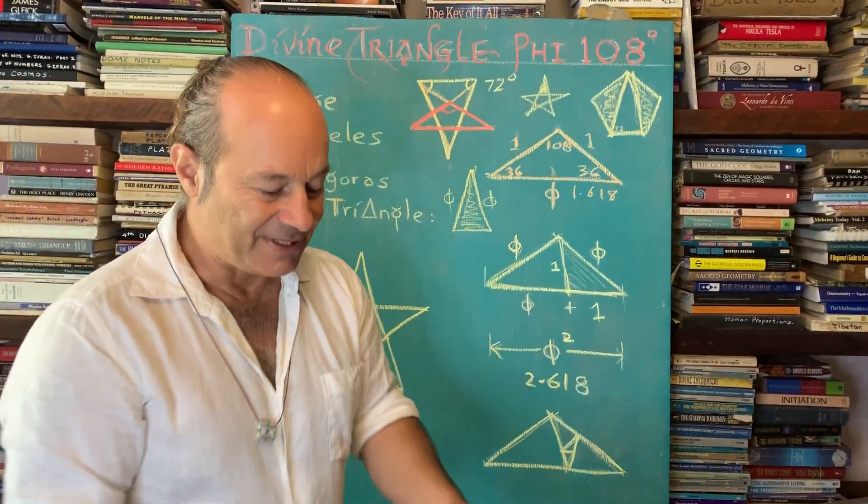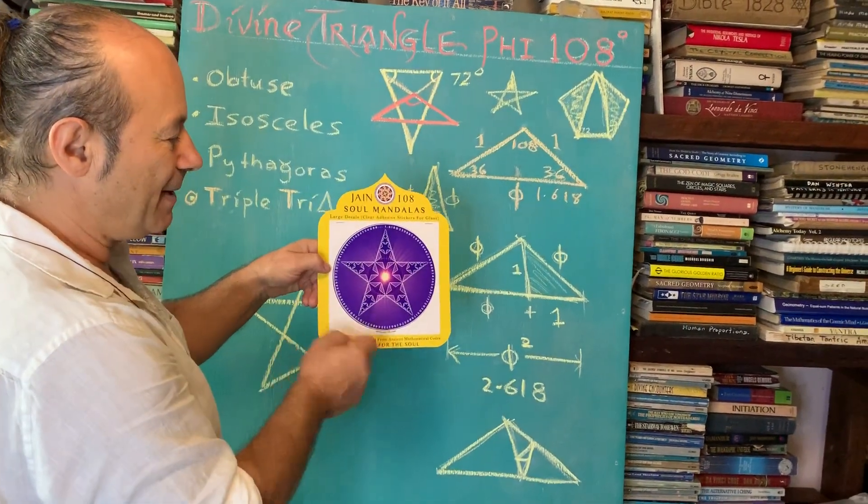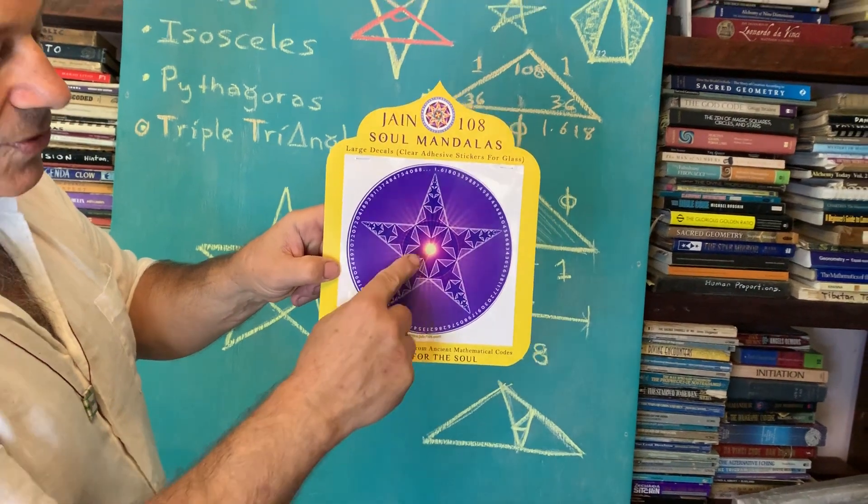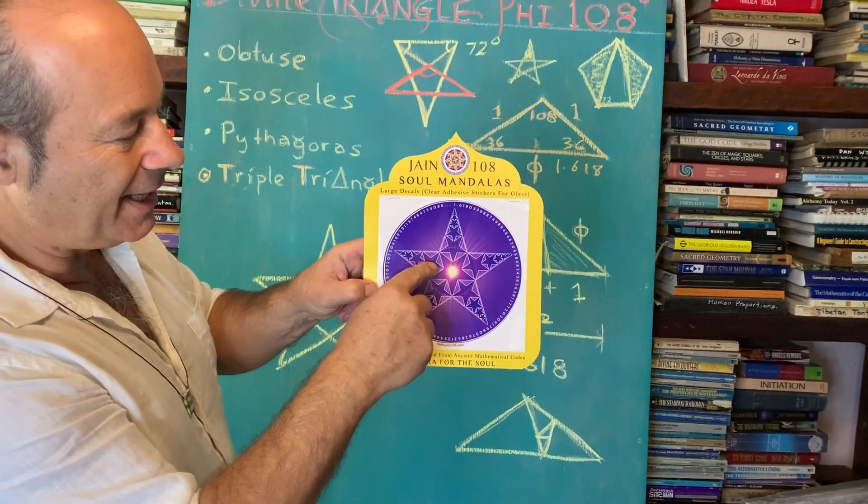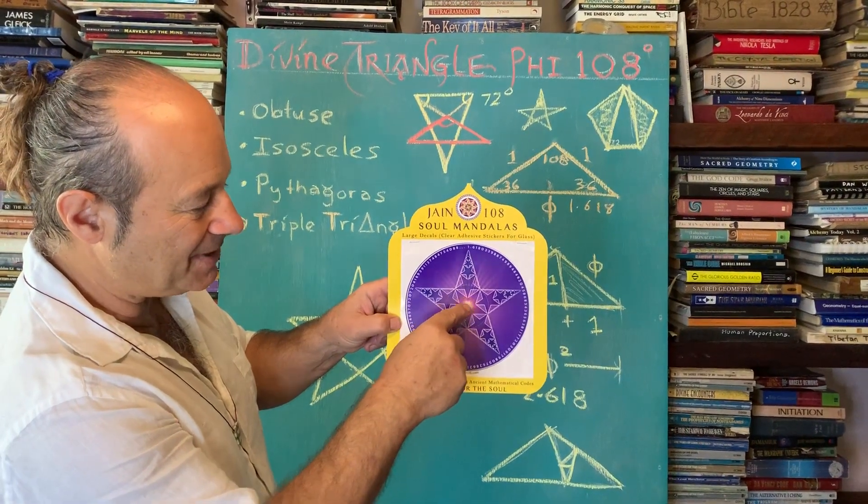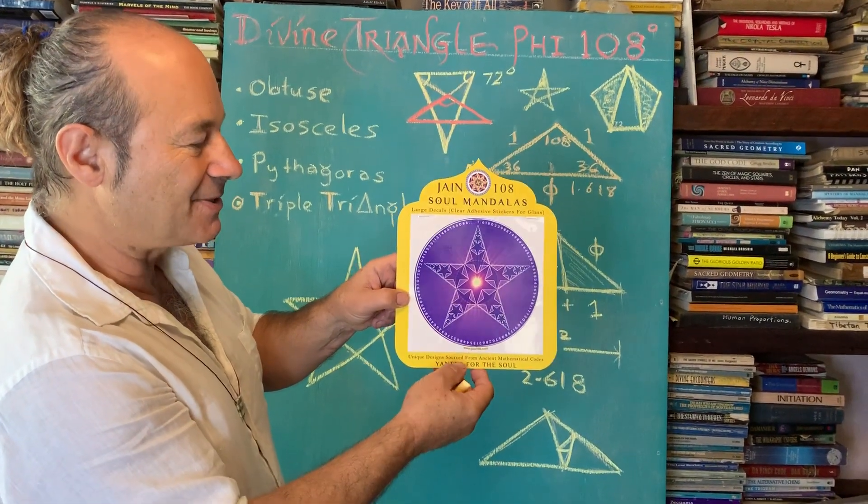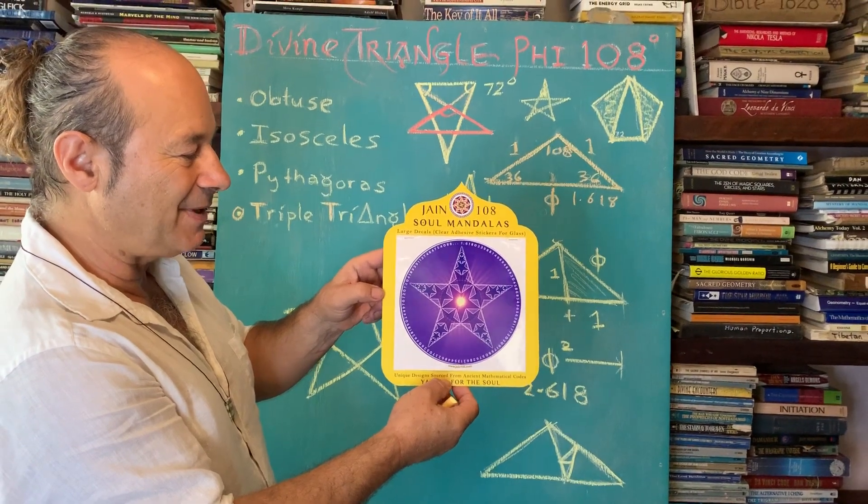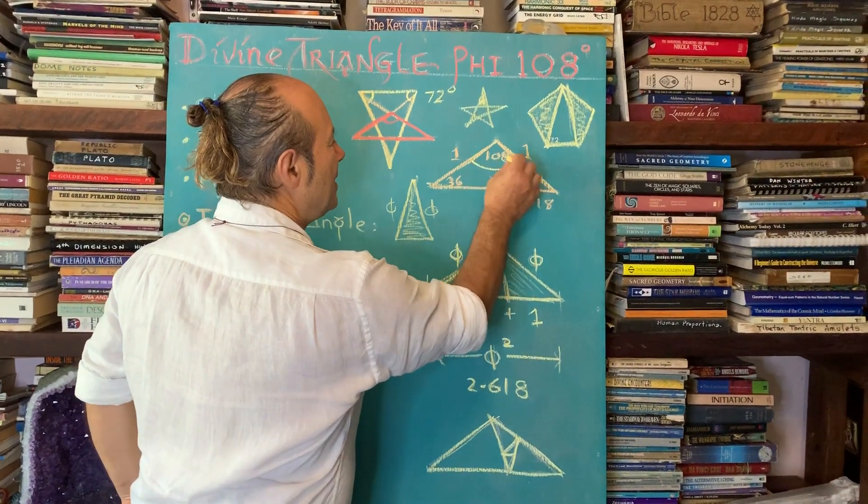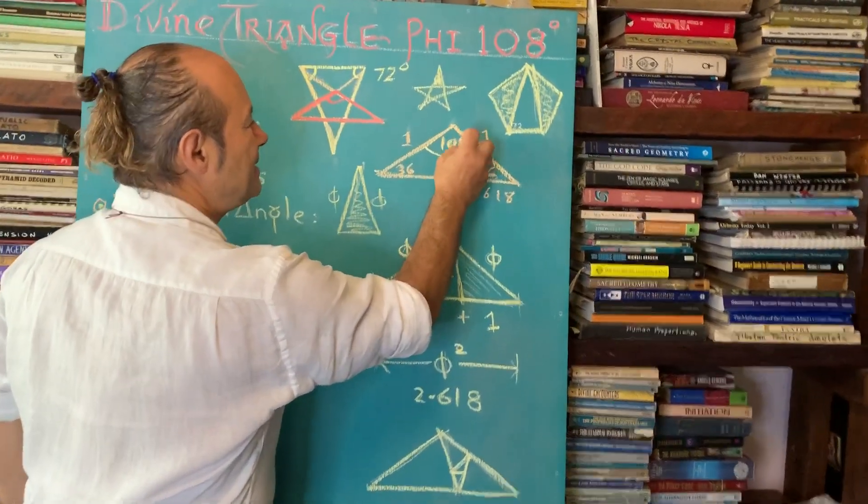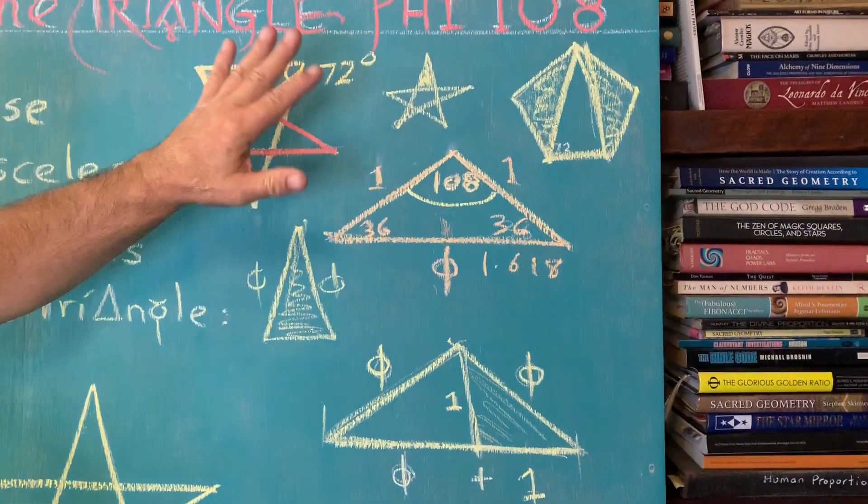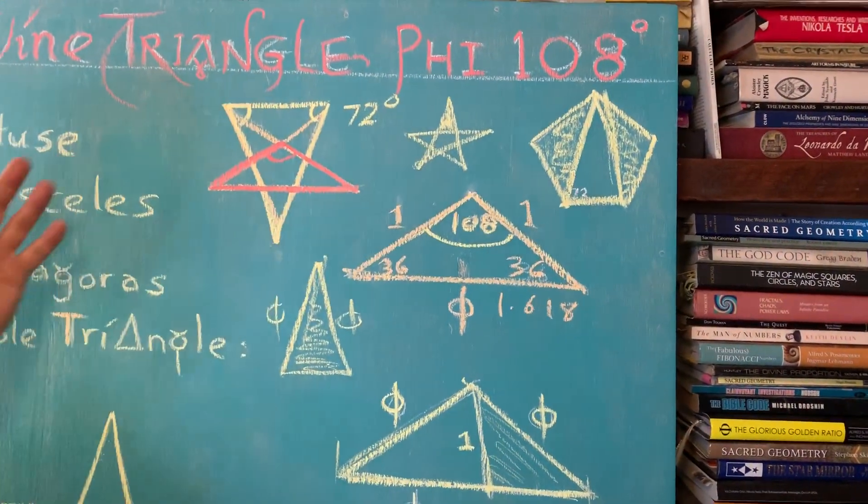And that's why the symbol for Pythagoras, the symbol for Pythagoras was a blue pentacle. And we know that when we draw the star within the star, it keeps reducing at a rate of 0.618. So you keep seeing the star within the star. So this is called an infinite geometric series. And the reason it can do that is because the critical angle here is called 108 degrees. So 108 is the critical angle of the pentagon. If it wasn't 108 degrees, it wouldn't work.